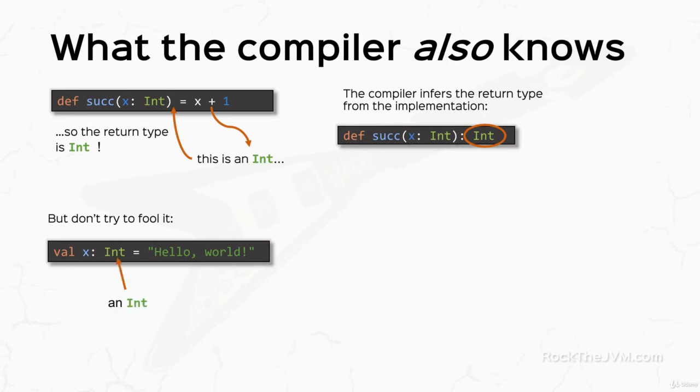The compiler still does type inference behind the scenes to do a type check. So the compiler is expecting an int, but on the right-hand side, the compiler figures out that the return expression is a string, so it confuses the compiler and it throws an error in your face called a type mismatch.